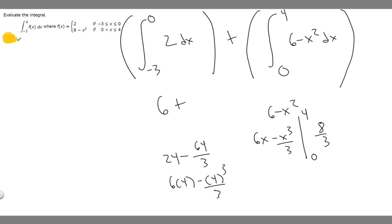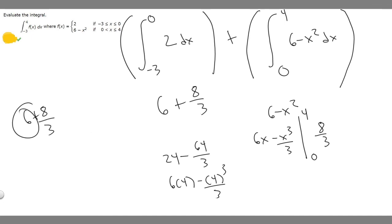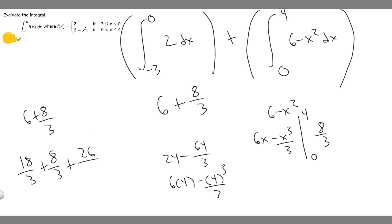Now we add the two results: 6 plus 8 over 3. Rewriting 6 as 18 over 3, we get 18 over 3 plus 8 over 3, which equals 26 over 3. And that's how you solve an integral where you have a piecewise function. The final answer is 26 over 3.